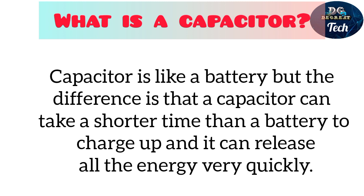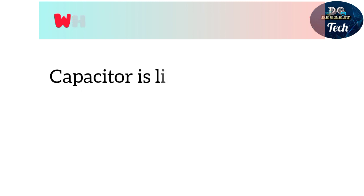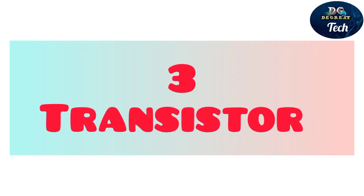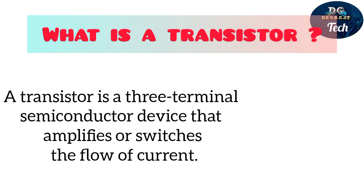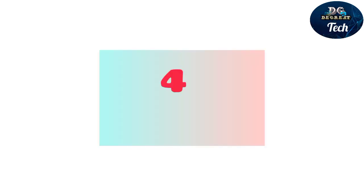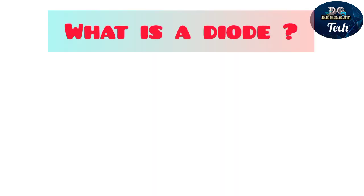A capacitor can also release all its energy very quickly. Number three: the transistor. A transistor is a three-terminal semiconductor device that amplifies or switches the flow of current.